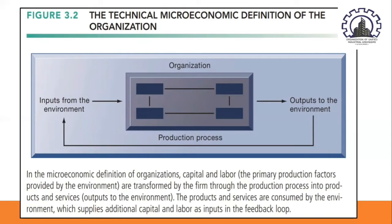An organization is more stable than an informal group, such as a group of friends that meets every Friday for lunch, in terms of longevity and routine-ness. Organizations are formal legal entities with internal rules and procedures that must abide by laws. Organizations are also social structures because they are a collection of social elements, much as a machine has a structure — a particular arrangement of valves, horns, chants, and other parts.